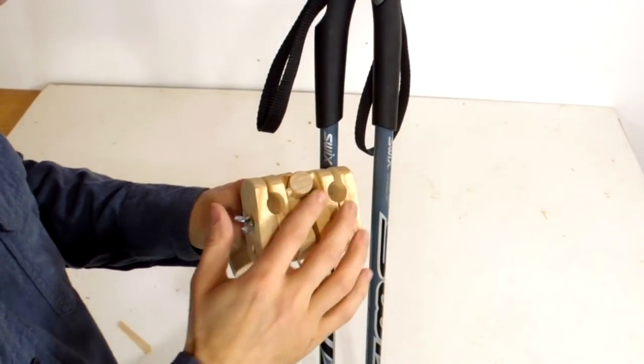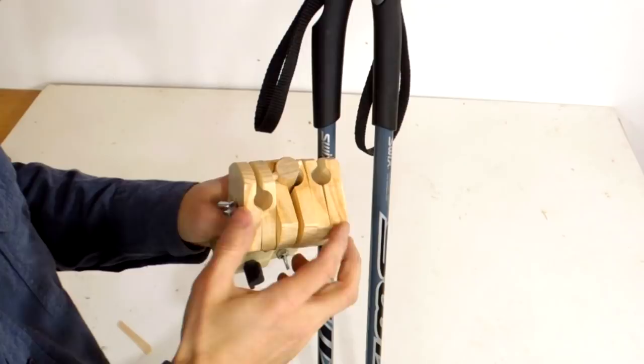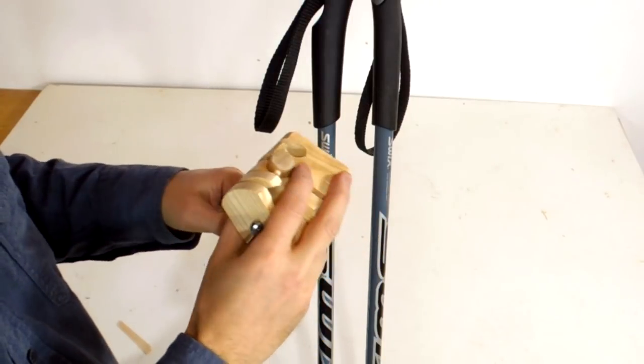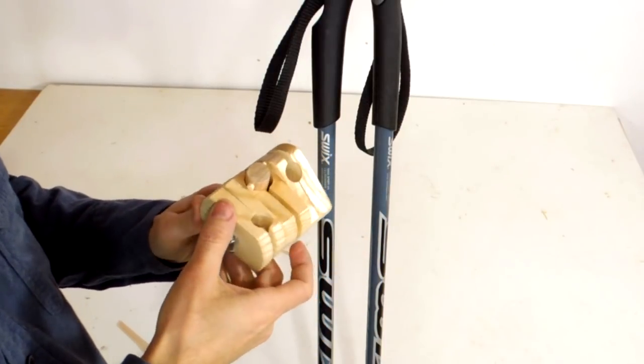The way this thing works is it's just a clamp that clamps two ski poles or hiking poles together. It has an extension for mounting the camera on.